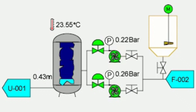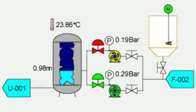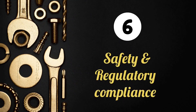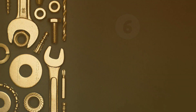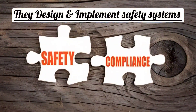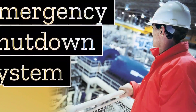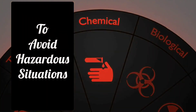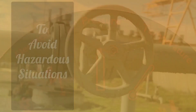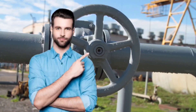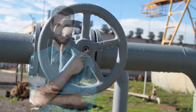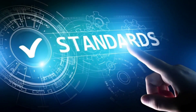The next responsibility is safety and regulatory compliance. They design and implement safety systems, such as emergency shutdown systems and interlocks, so that hazardous situations can be avoided. Instrumentation engineers also ensure that instrumentation and control systems meet relevant industry standards and regulations.